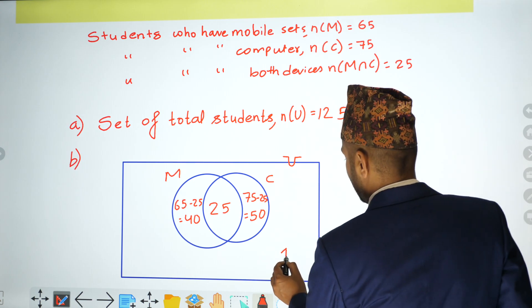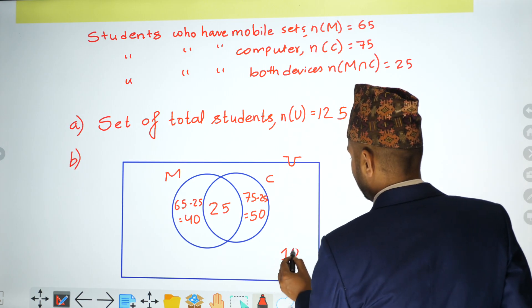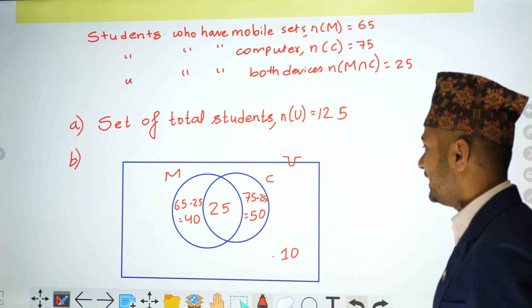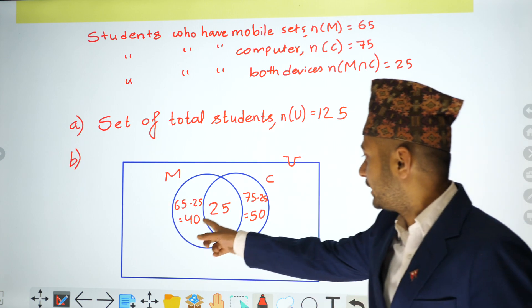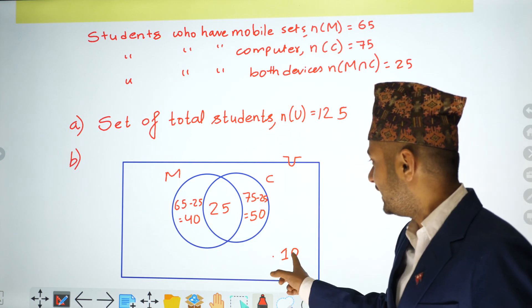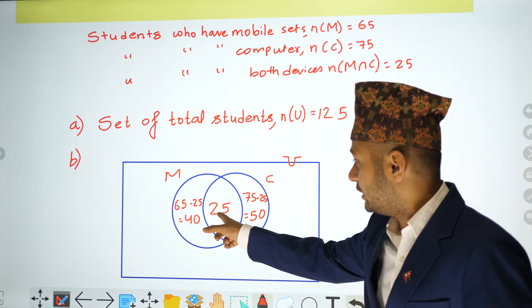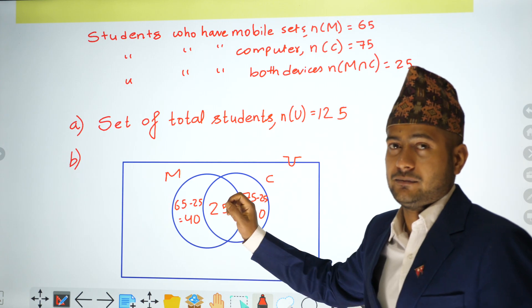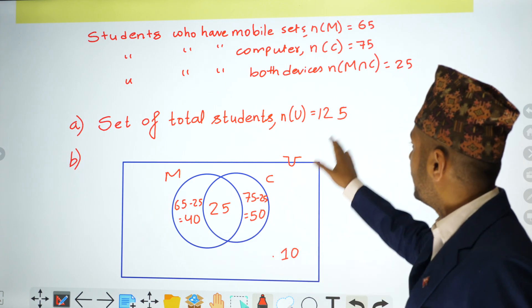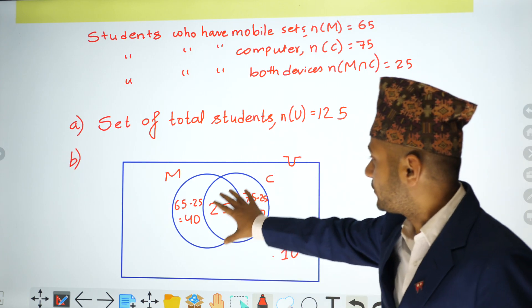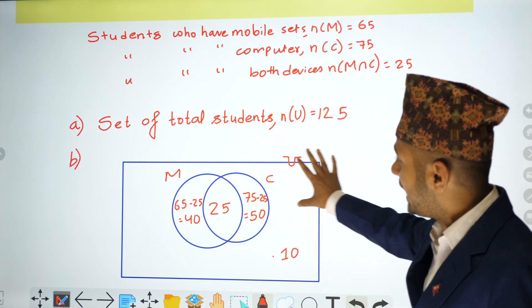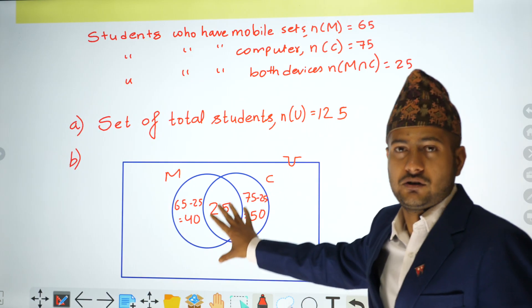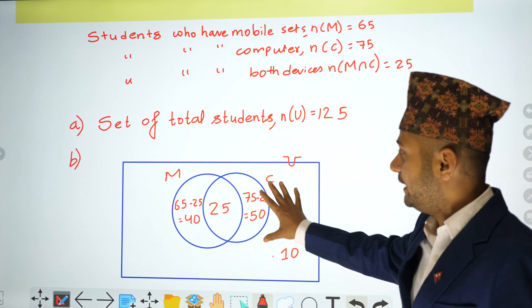So we have 40, 50, 90, and 25 — totaling 125. This gives us the Venn diagram for the above set.